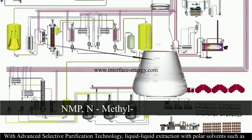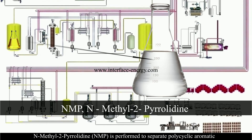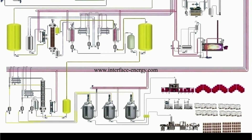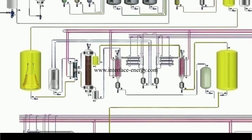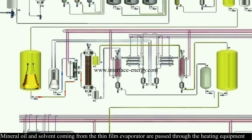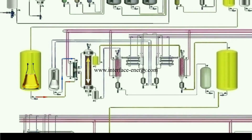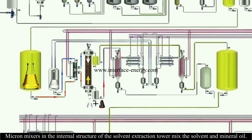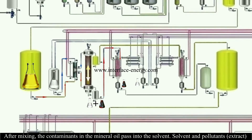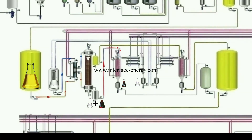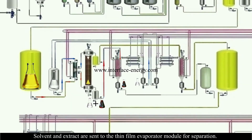Using advanced selective purification technology, liquid-liquid extraction is performed with polar solvents such as N-methyl-2-pyrrolidone (NMP) to separate polycyclic aromatic hydrocarbons and heteroatomic compounds. Mineral oil and solvent are passed through heating equipment and sent to the solvent extraction tower. Solvent enters from the upper part and mineral oil from the lower part. Micron mixers inside the tower mix them, allowing contaminants to pass into the solvent. The solvent and contaminants (extract) exit from the bottom of the extraction tower and are sent to the thin film evaporator module for separation.